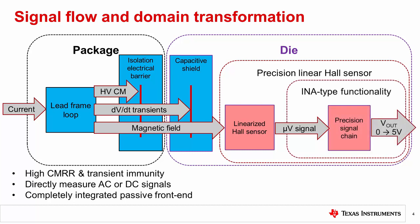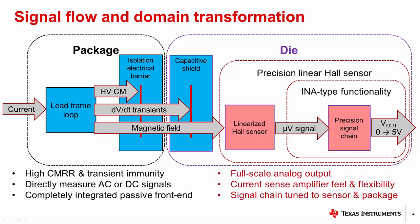Here, a precision signal chain, very similar to the functionality of an INA type current shunt amplifier, is needed to recover this small signal and amplify it to a full scale analog output voltage, which can easily be interfaced to the rest of the electronic system. Because the entire signal flow is integrated into a single monolithic unit, the signal chain can be tuned and calibrated to match the sensor and package mechanics. This enables an out-of-the-box system level performance based heavily on the performance and flexibility of the signal chain itself.